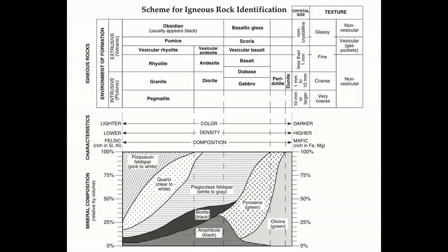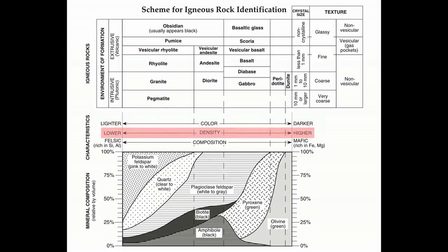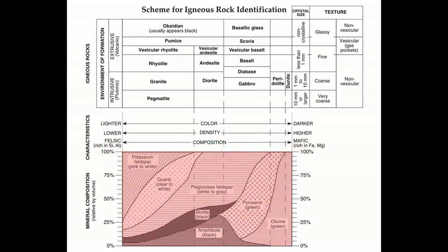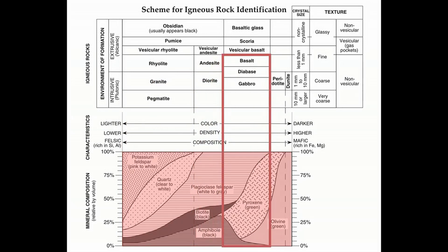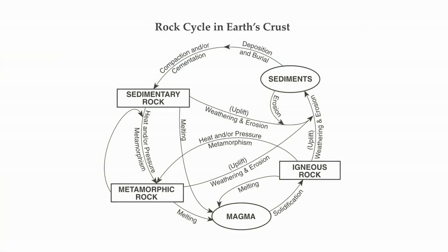Zooming back out on the igneous rocks chart: the center area shows color — rocks on the left are lighter and on the right are darker. Here's density — left side is less dense, right is more dense. Here's composition — the left side are felsic, meaning rich in silicon and aluminum, and the right side are mafic, rich in iron and magnesium. The bottom of the chart shows mineral composition. For example, pegmatite commonly contains potassium feldspar, quartz, plagioclase, biotite, and amphibole, while basalt, diabase, or gabbro contain minerals like pyroxene and olivine.